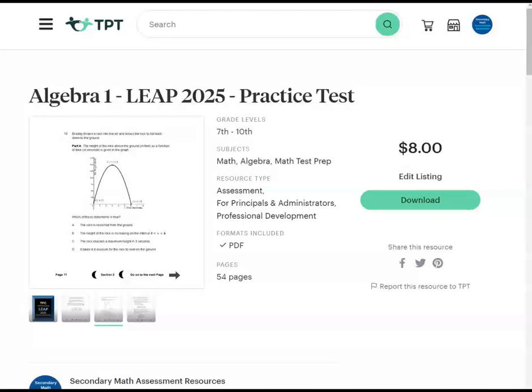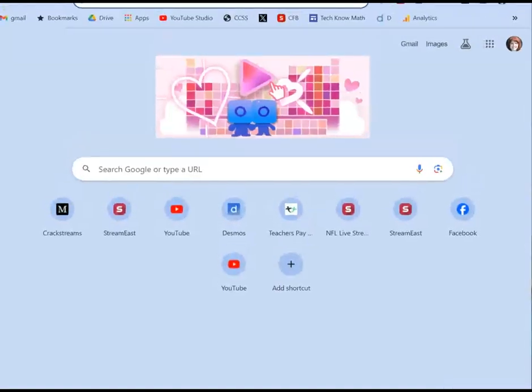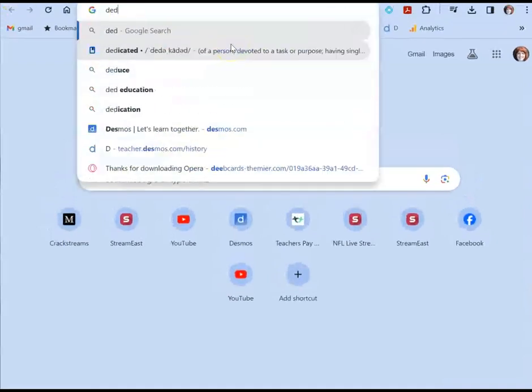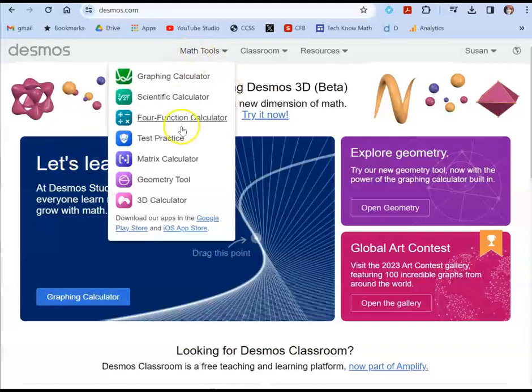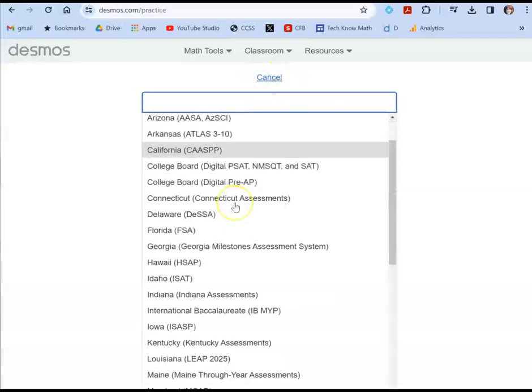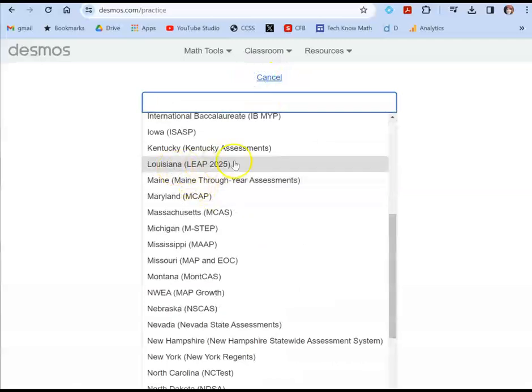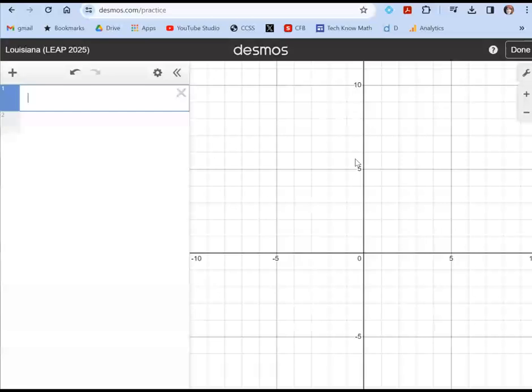You can go to Desmos.com. So, let me show you how that works. And you will click on Math Tools, where it says Test Practice. Choose that. And at the top, don't choose down here. Choose Assessment. You're going to go to Louisiana, which is the LEAP test, LEAP 2025. That's the graphing calculator you'll want to use when giving this practice test or any other test, really, if you're in the state of Louisiana, so that your kids can get accustomed to the Desmos graphing calculator.